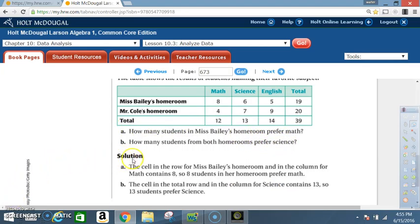Solution. The cell in the row from Miss Bailey's homeroom and in the column for math contains 8. So 8 students in her homeroom prefer math. In other words she's looking right here. The column is math. The row is homeroom. So for math that's 8.